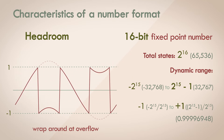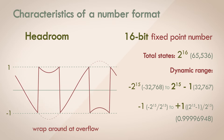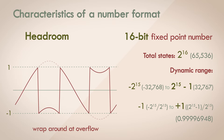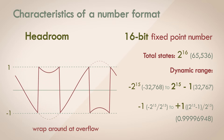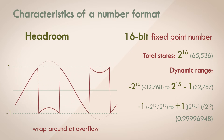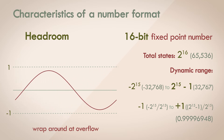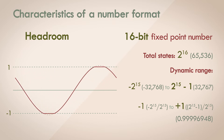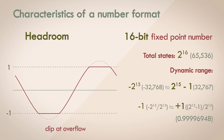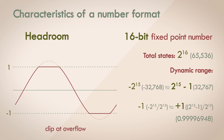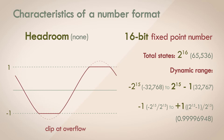Previously I had said an overflow would result in the value wrapping back around to the other end of the range. Strictly speaking, this is not true — the result of overflow is actually undefined behaviour, which is somehow worse and depends on the system. So overflow has to be accounted for and dealt with at every step of the calculations, usually by clipping the signal and holding it at the extreme end of the range when it exceeds the range. So technically, there is no headroom when dealing with fixed point audio.